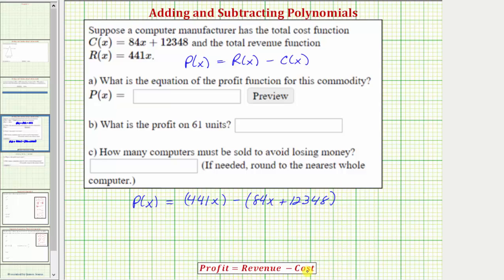So for the next step, we'll clear the parentheses and because of the subtraction here, if it's helpful, we can think of distributing a negative one. So the profit function P(x) equals 441x minus 84x minus 12,348. And now for the last step, we'll combine like terms. Notice how we have two x terms.